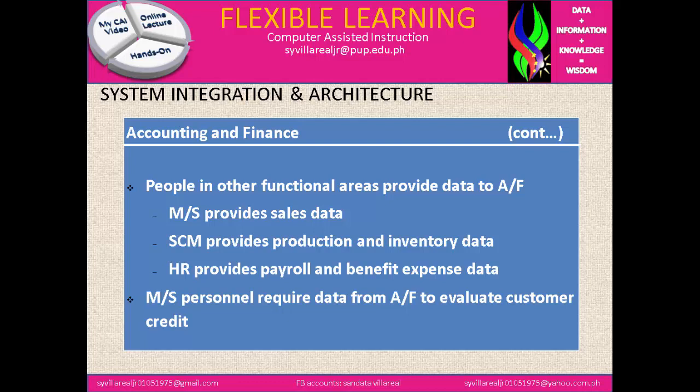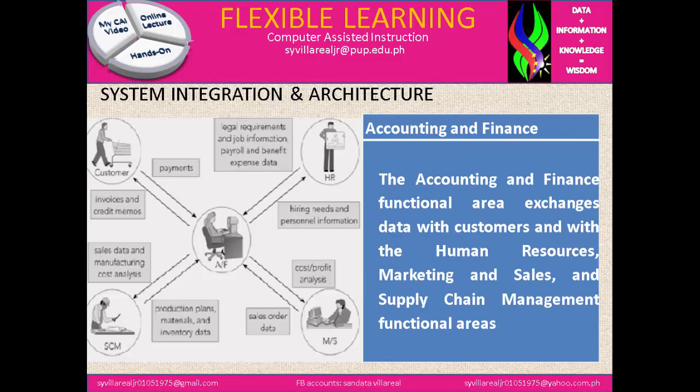People in other functional areas provide data to accounting and finance: Marketing and Sales provides sales data, SCM provides production and inventory data, and HR provides payroll and benefit expense data. MS personnel also requires data from AF to evaluate customer credit. Here we have the figure of Accounting and Finance.